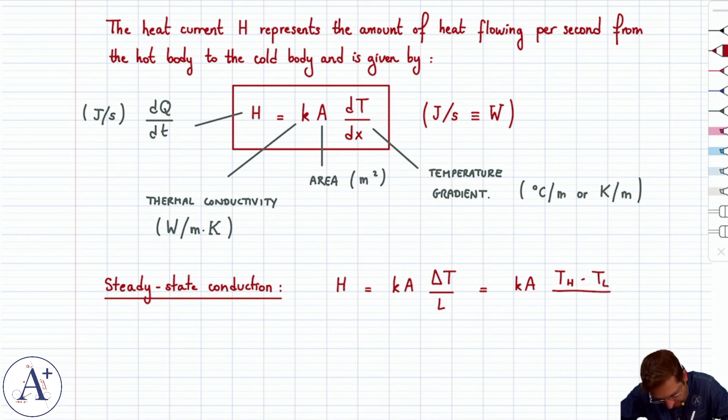The length L over which there's conduction anyway. It doesn't have to be a rod. But it's going to be TH minus TC divided by the length L, which is typically a lot easier to solve than solving the above equation.